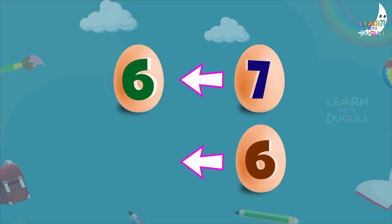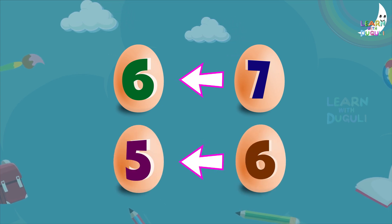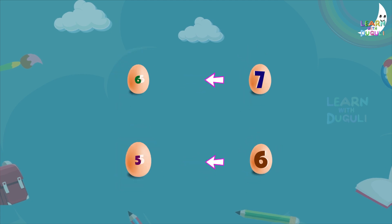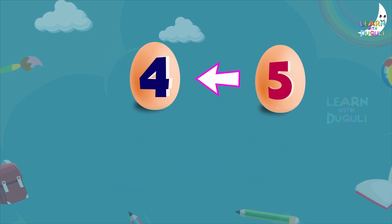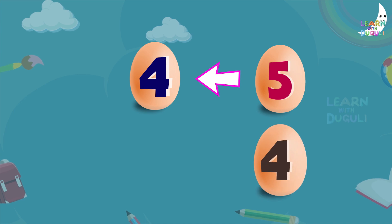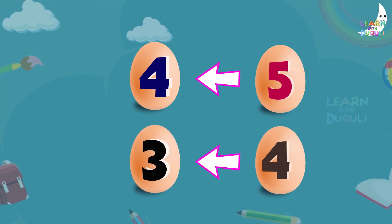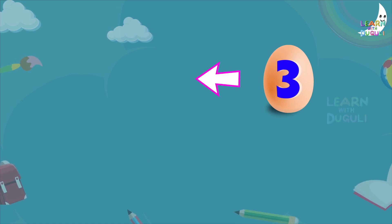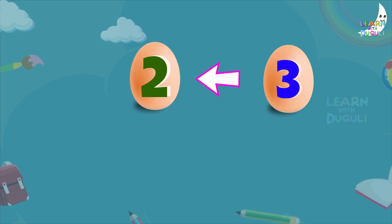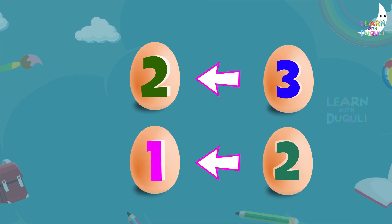Six before number is five. Five before number is four. Four before number is three. Three before number is two. Two before number is one.